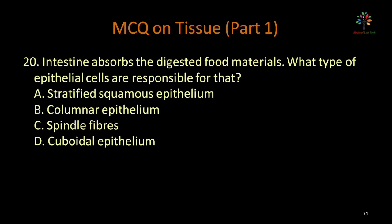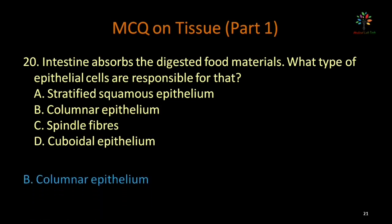The intestine absorbs digested food materials — which type of epithelial cells are responsible? Options: stratified squamous epithelium, columnar epithelium, spindle fibers, cuboidal epithelium. For absorption, columnar epithelium cells are mainly responsible. Correct option is columnar epithelium. This is the end of the video — please like, share, comment, and subscribe if you're new to the channel. Thank you for watching.